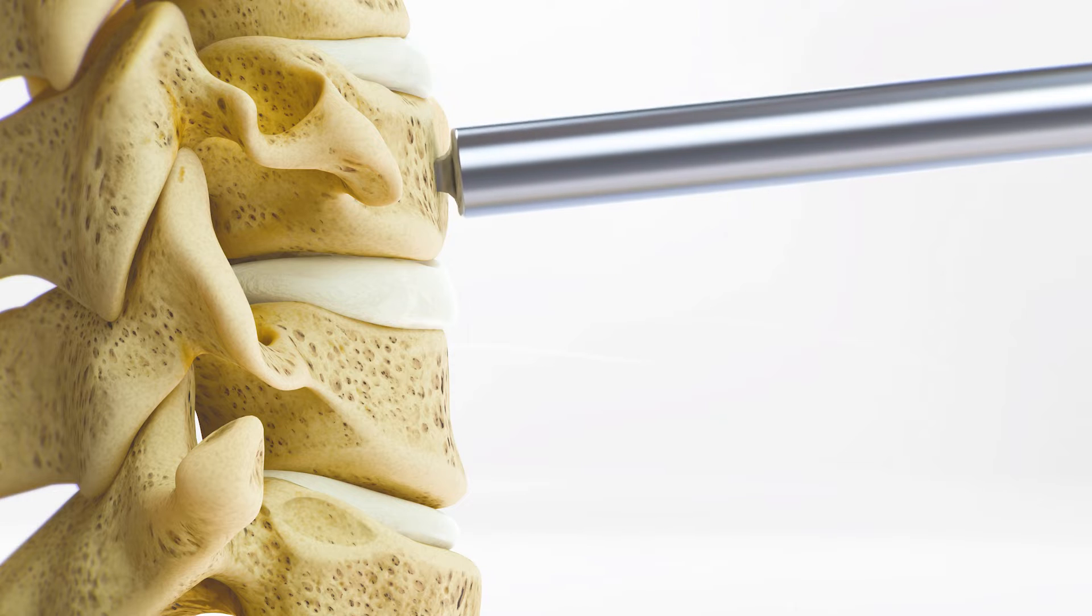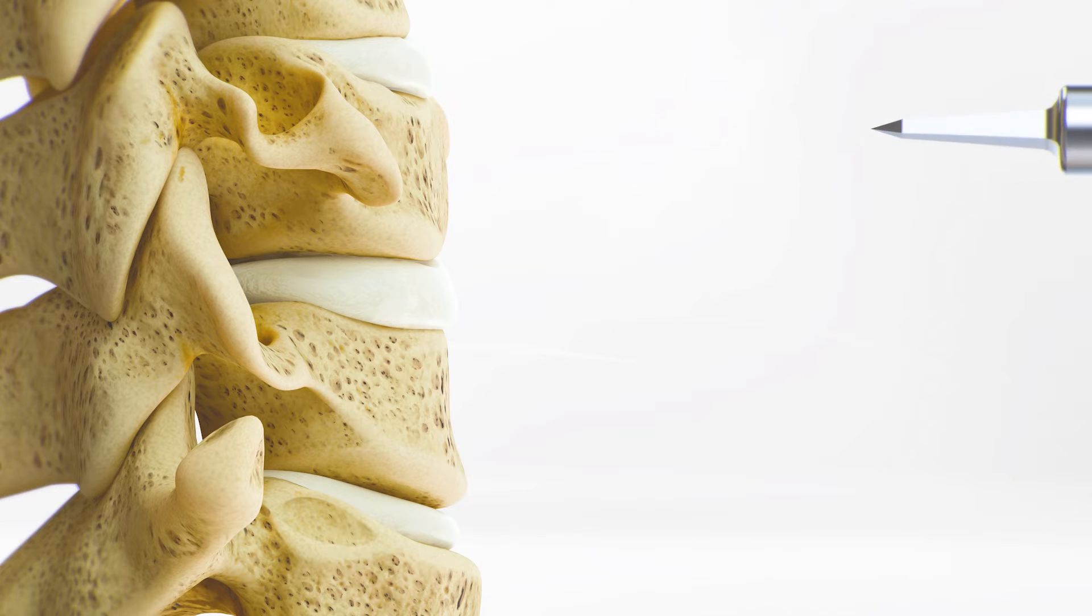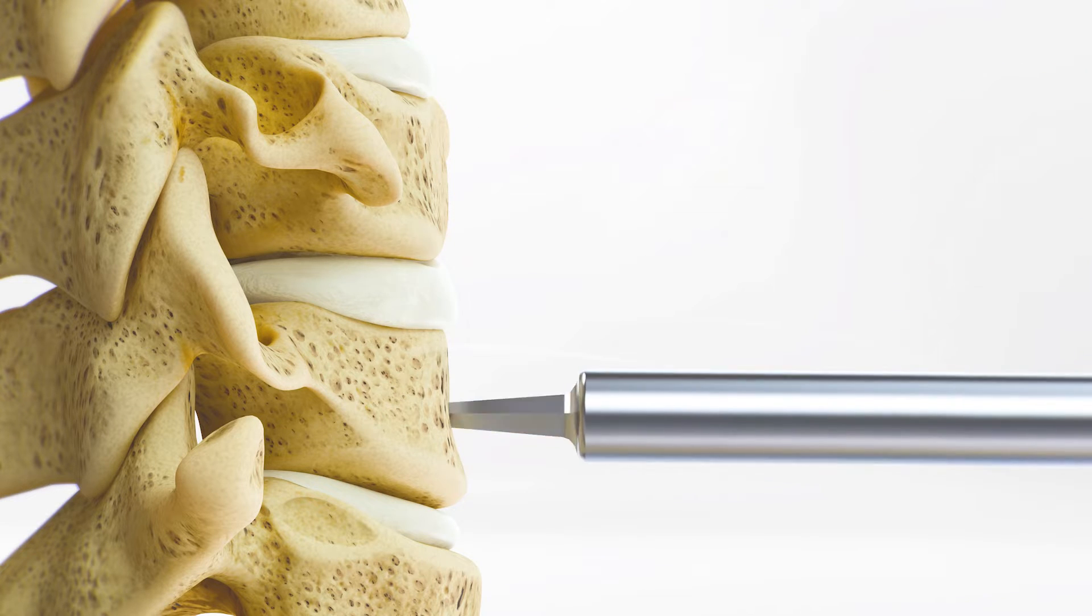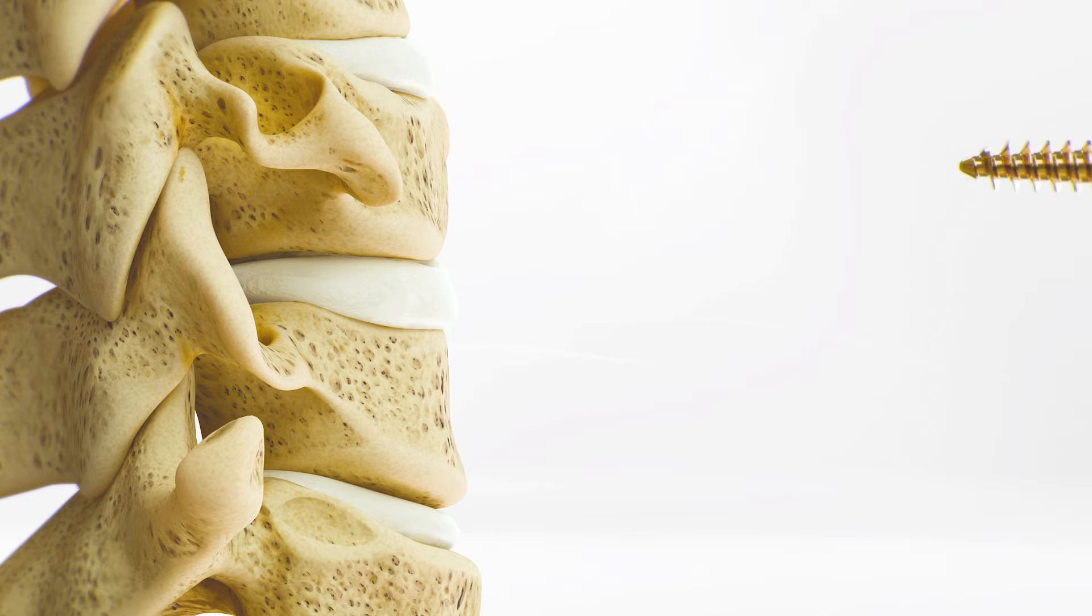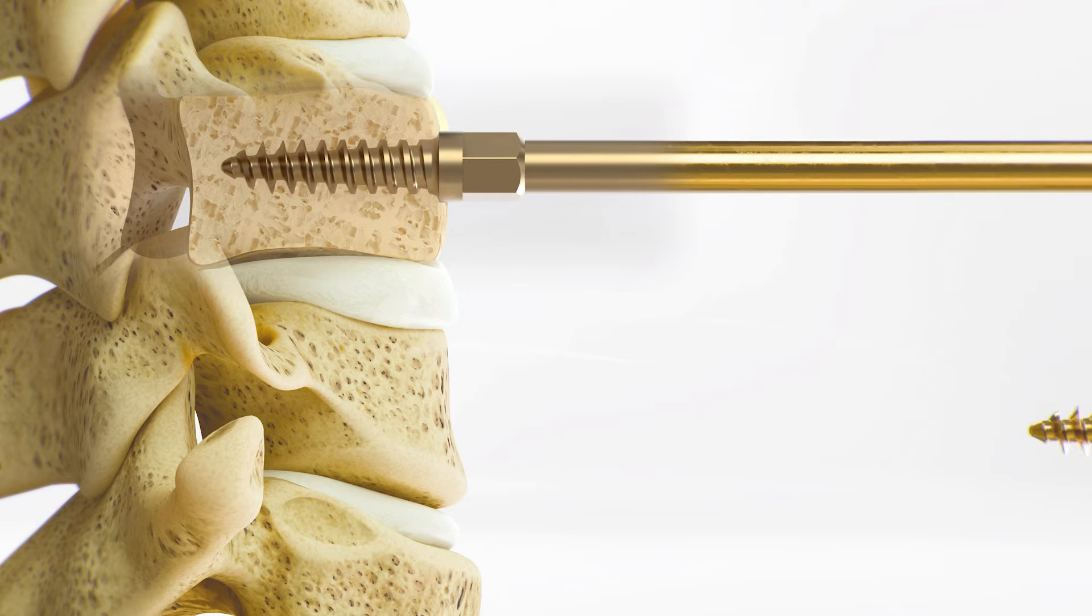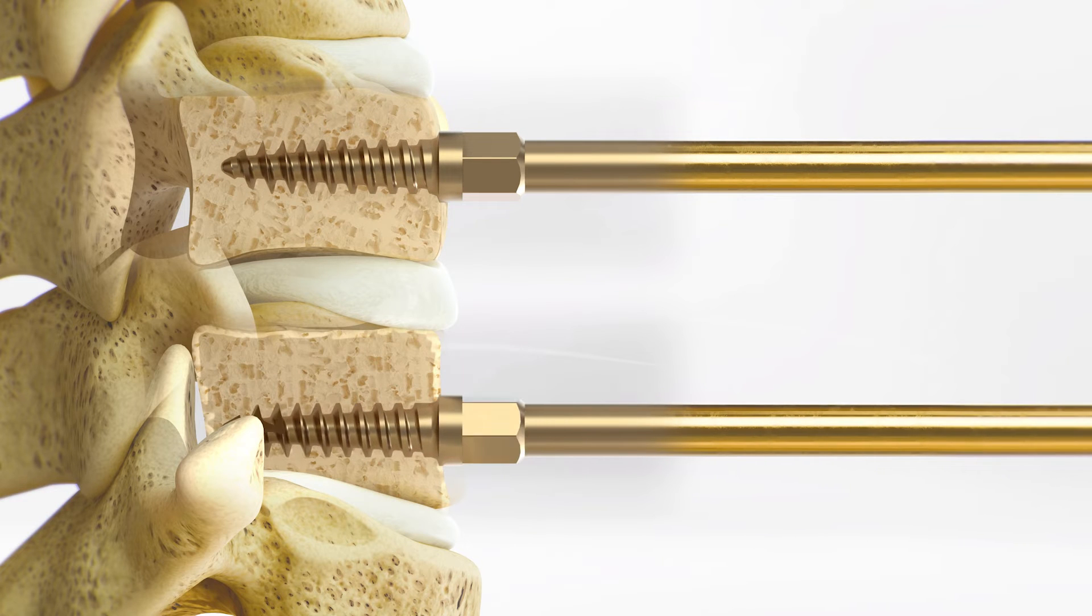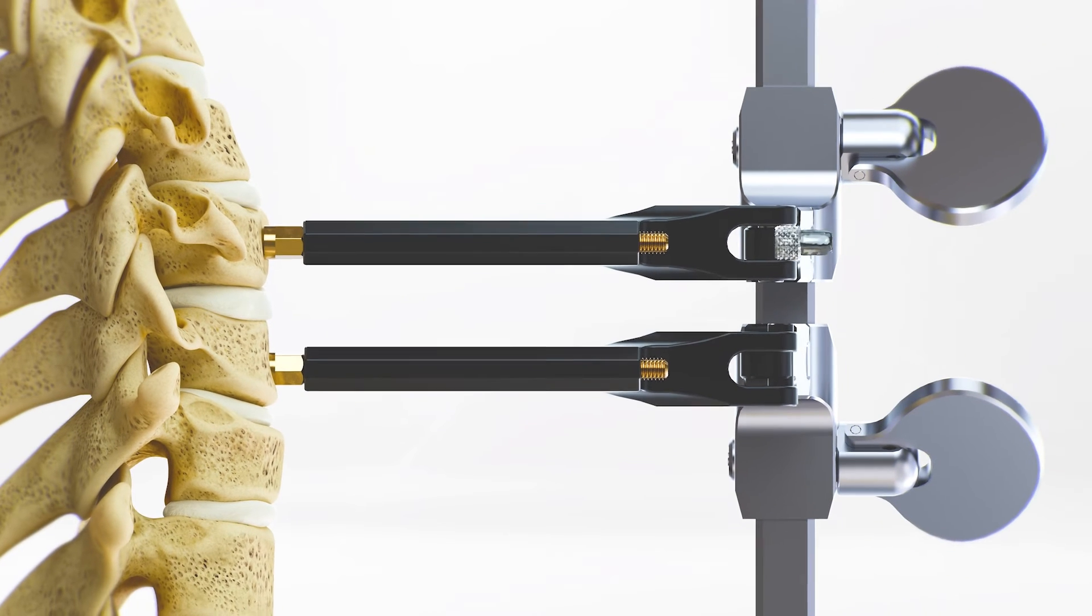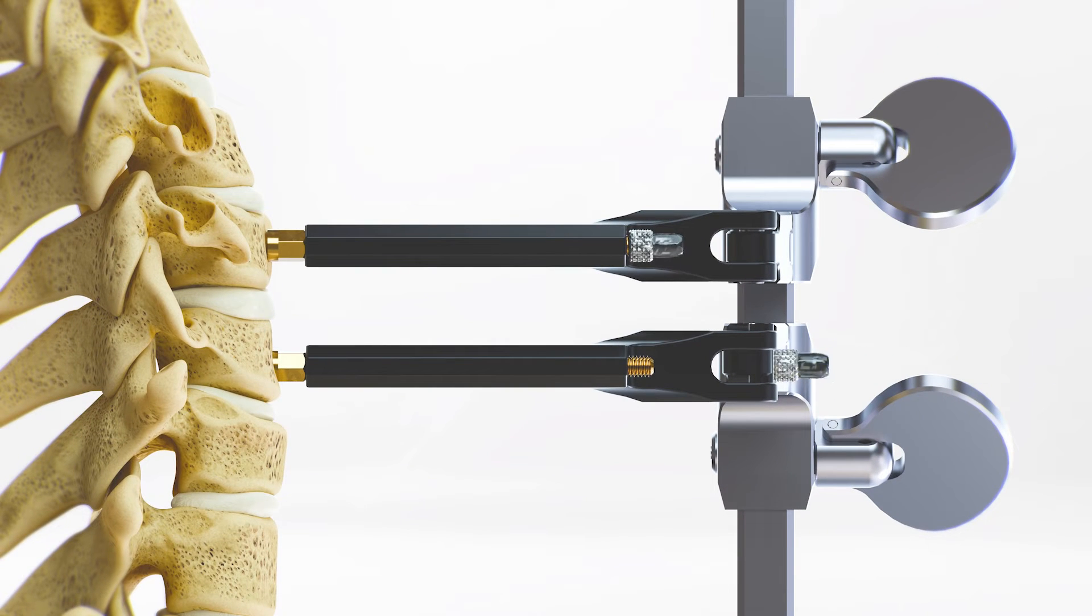Next, perforate the anterior cortex of the superior and inferior vertebrae in the lateral midline and vertical center with the awl. Insert retainer screws with the self-retaining screwdriver. Slide the vertebral body retainer over the screws and lock it in place with retainer nuts.